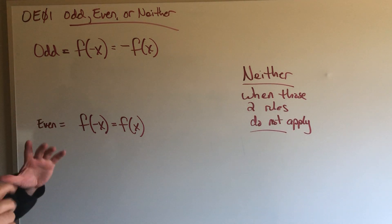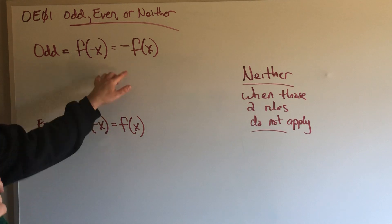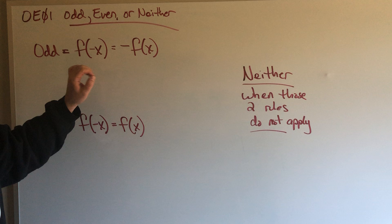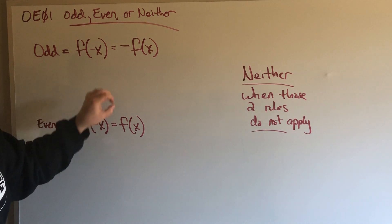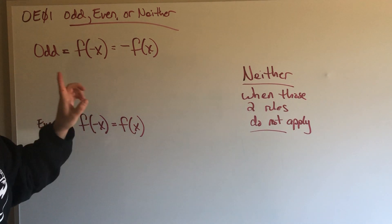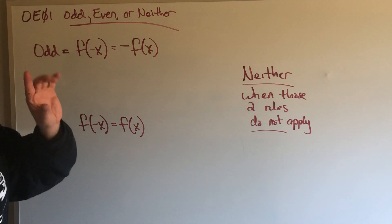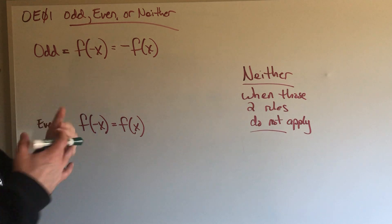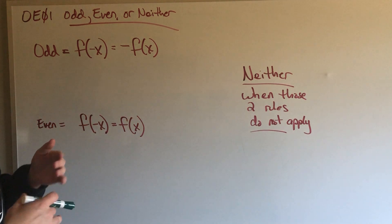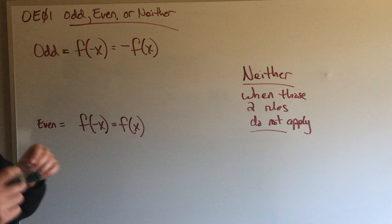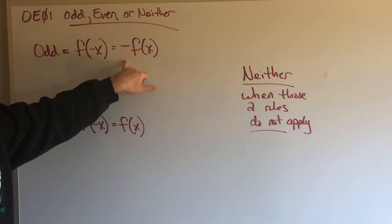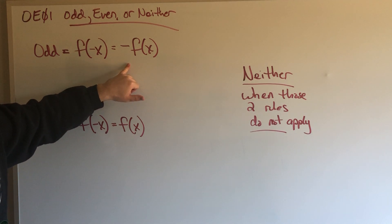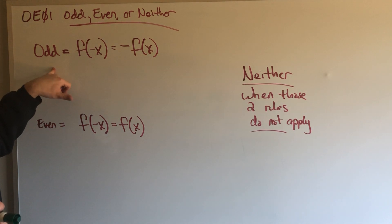Basically, for a function to be classified as odd, every time I see x in that equation, if I were to replace that x value or those x values with a negative x, and then I were to simplify — because we don't want to have a negative x there — and the result of that function gives me a negative f of x, meaning whatever the function was but with a negative in front of it, then that function is classified as odd.